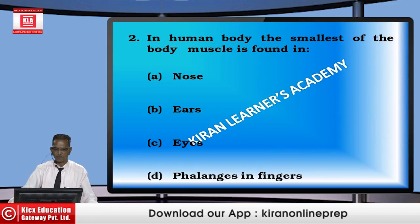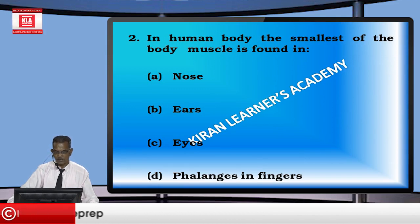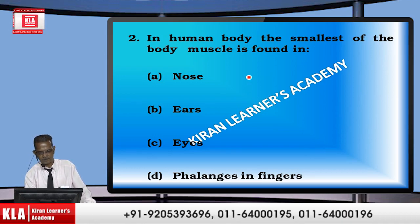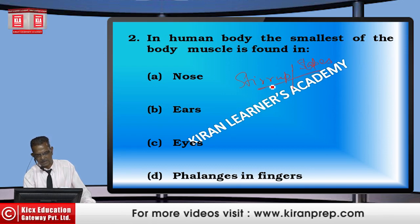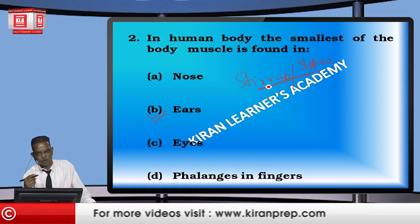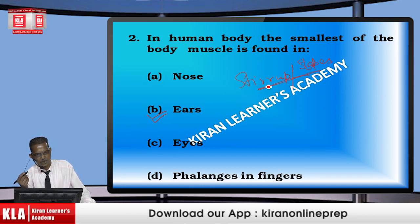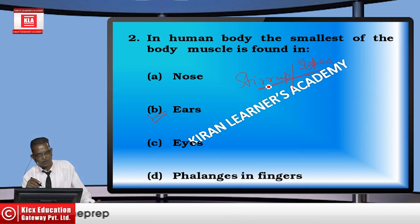In the human body, the smallest muscle is found in: nose, ears, eyes, or phalanges in the fingers? The smallest bone in the body is the stapes — also called the stirrup — an ear ossicle. Naturally, the smallest bone is attached to the smallest muscle. So the correct option is ears. The smallest muscle is found attached to the ear ossicle — the third ear ossicle, called the stapes.